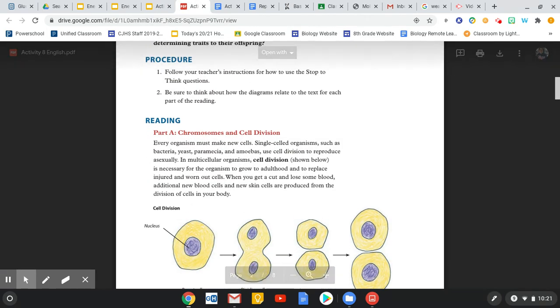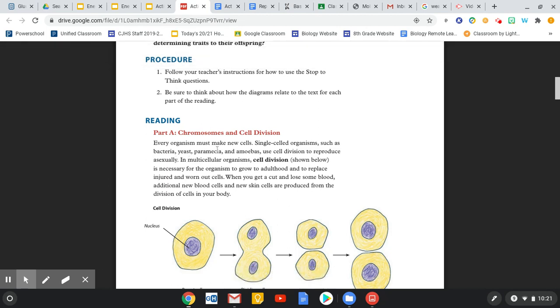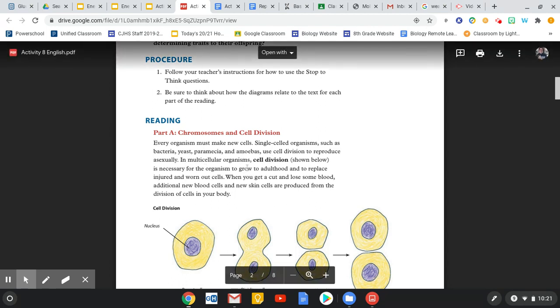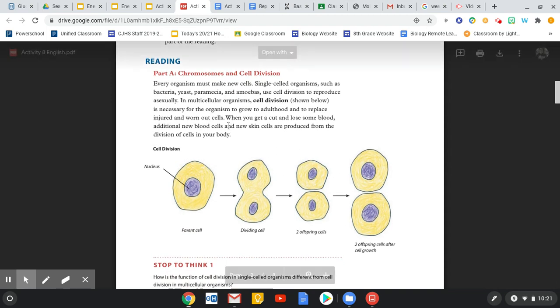So every organism must make new cells. Single-celled organisms, such as bacteria, yeast, paramecia, those are those things that were under the microscope that we looked at, and amoebas use cell division to reproduce asexually. In multicellular organisms, cell division is necessary for the organisms to grow to adulthood and to replace injured and worn-out cells. When you get a cut and lose some blood, additional new blood cells and new skin cells are produced from the divisions of cells in your body.